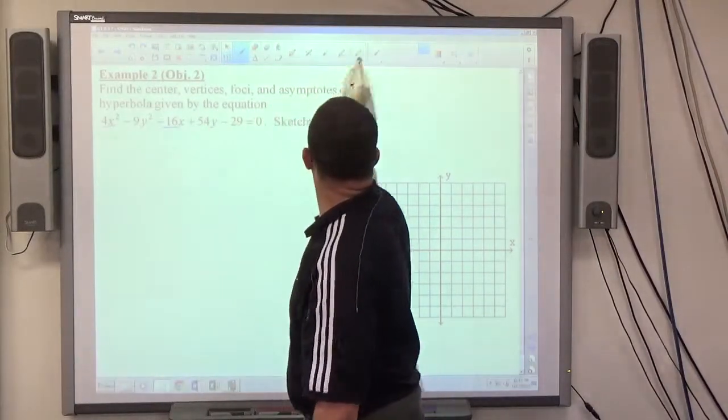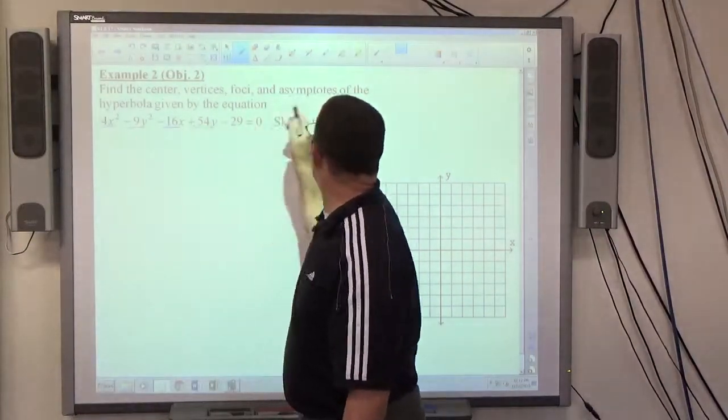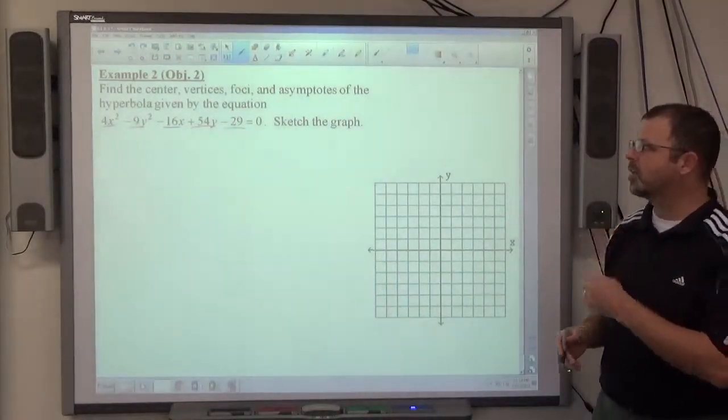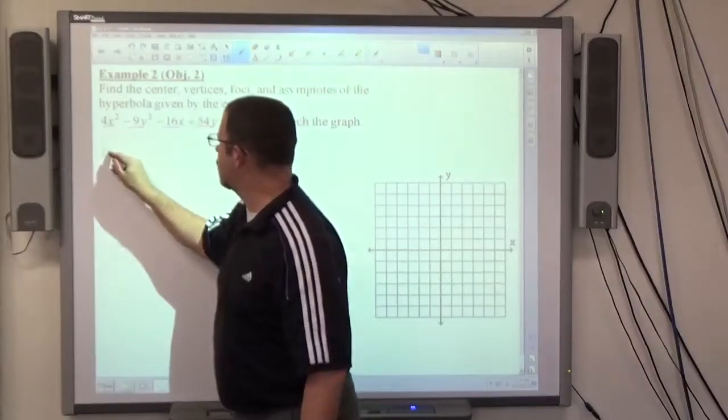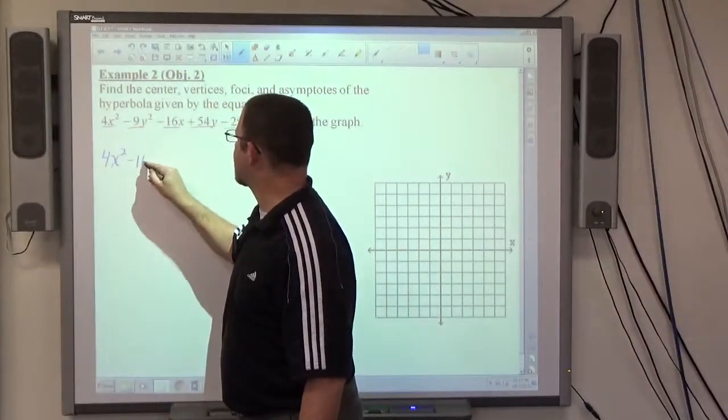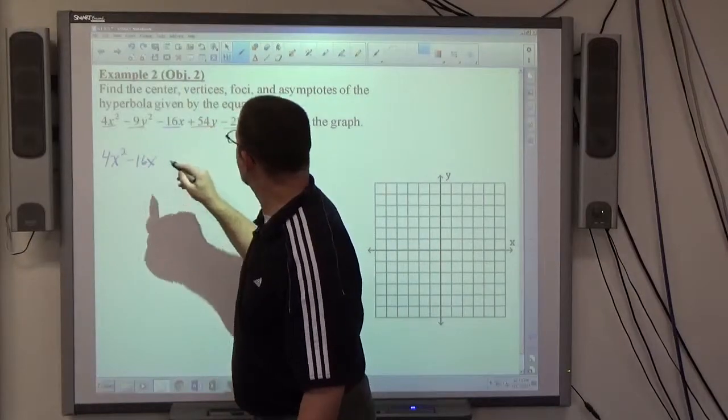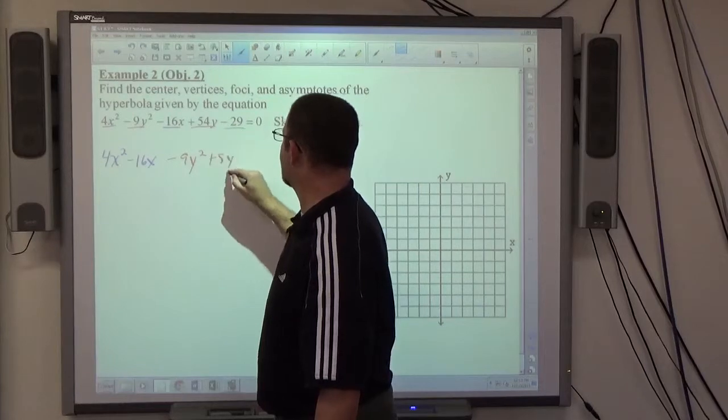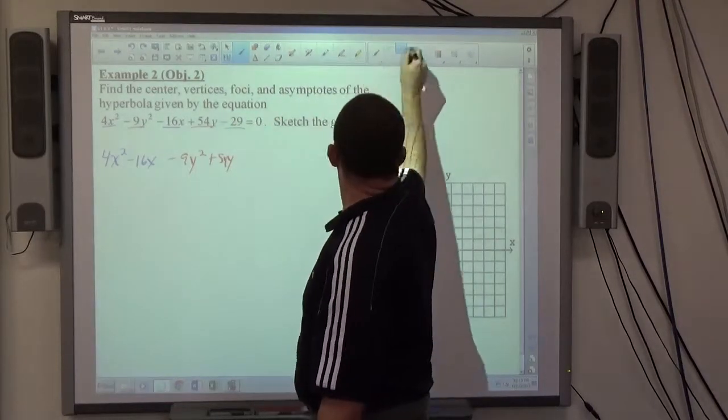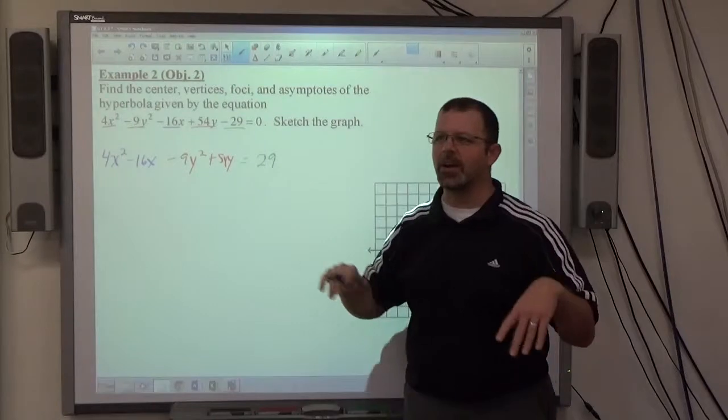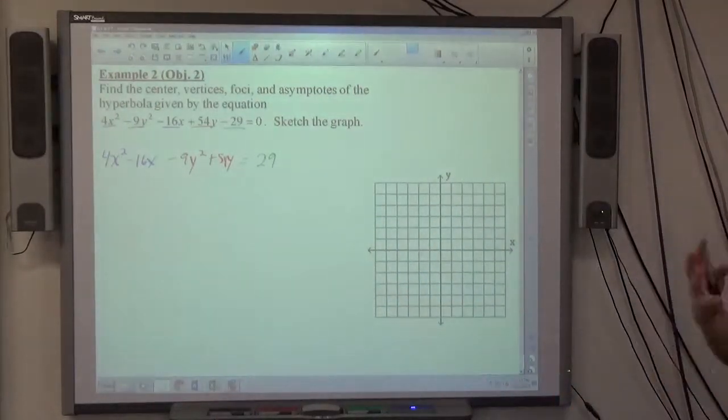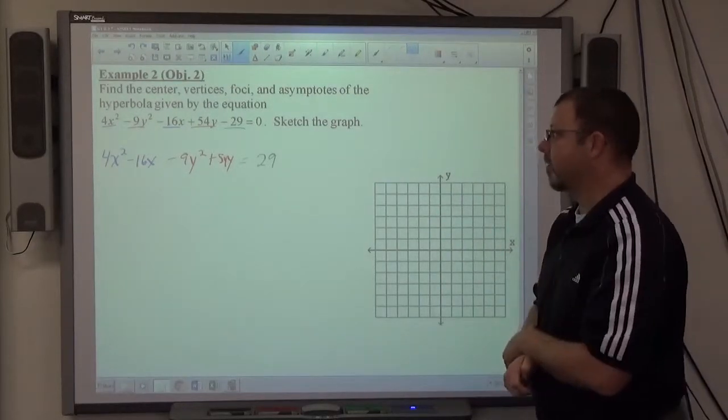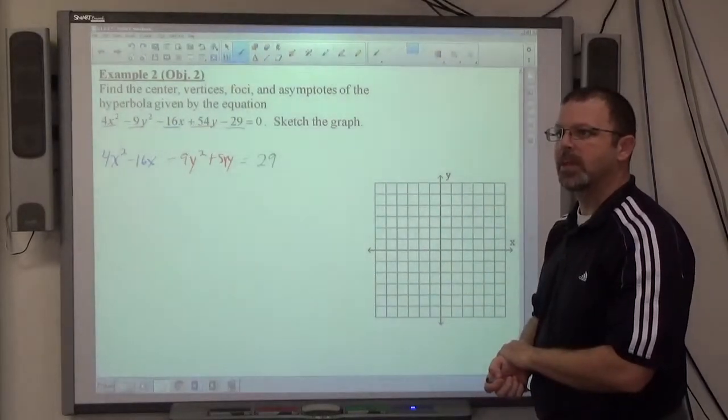So my x's are here, my y's are here, and my constant is right there. I want to group the x's, group the y's, and move the constant to the other side. So I do that first, just basic moving things around. 4x squared minus 16x to the first. And we have minus 9y squared plus 54y is going to equal 29.